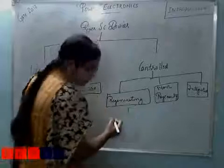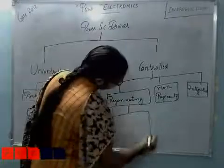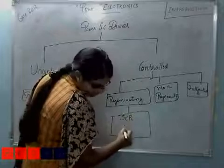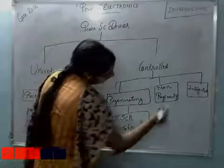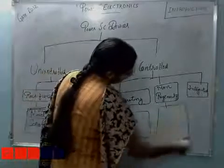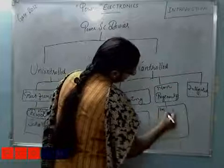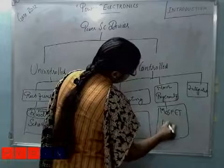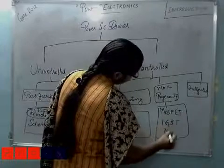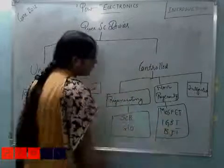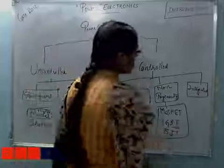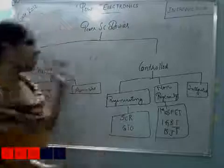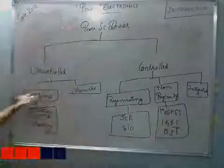Regenerating devices include SCRs, GTOs, etc. Non-regenerating devices, which are what we more commonly see, include MOSFET, IGBT, and VGT. Remember that all these devices are power devices. This is the basic hierarchy of power electronic devices: controlled versus uncontrolled, and within controlled — regenerating versus non-regenerating.